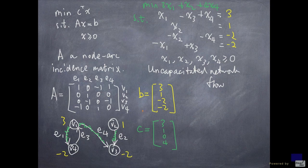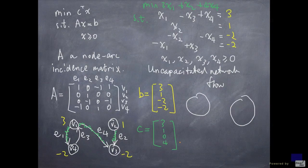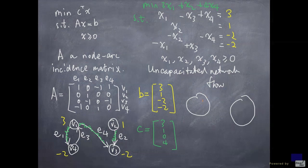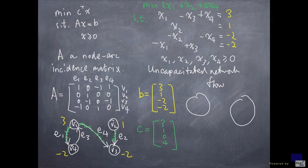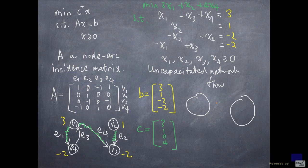Now what happens if the graph representing the matrix A is not in one piece? Suppose there are two pieces. If you play around with this, you'll realize that you can actually decompose the problem into two. You can write down this minimization problem on this first piece. And then you can write down this problem for the second piece. And you can solve them independently.